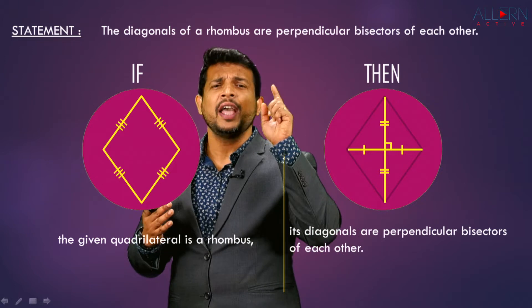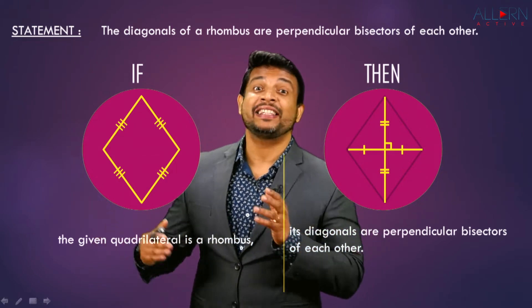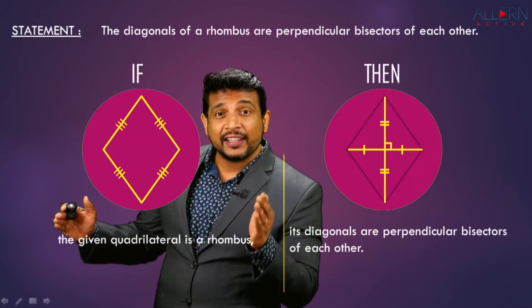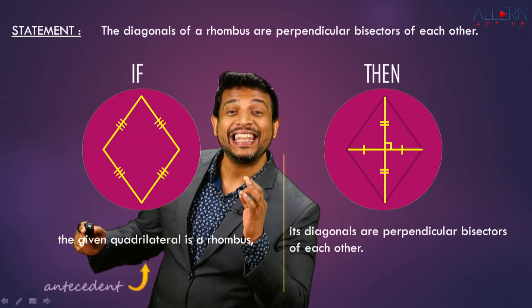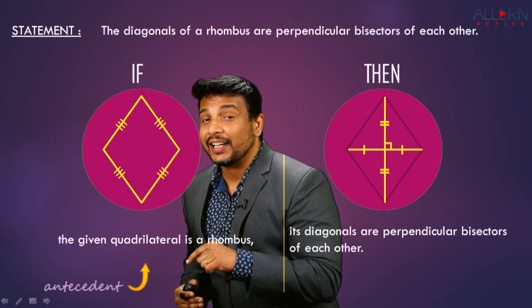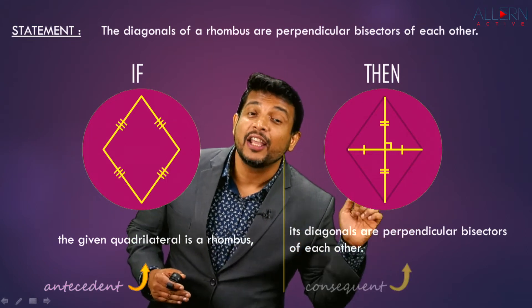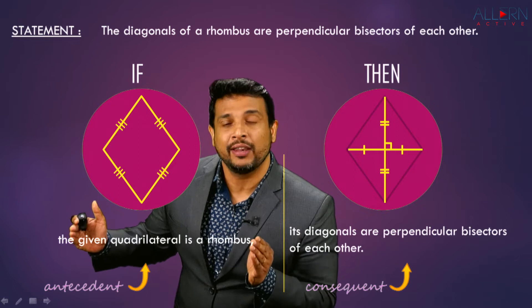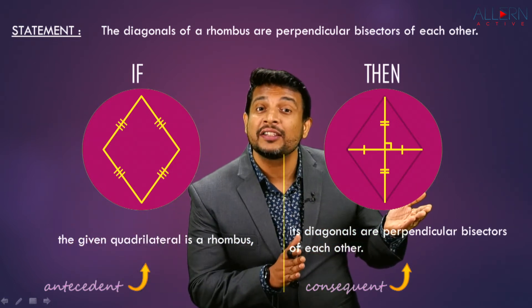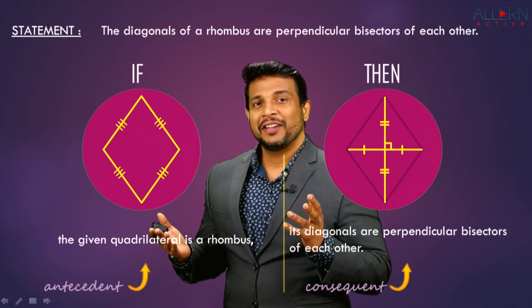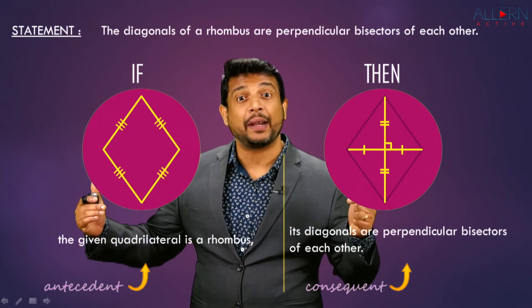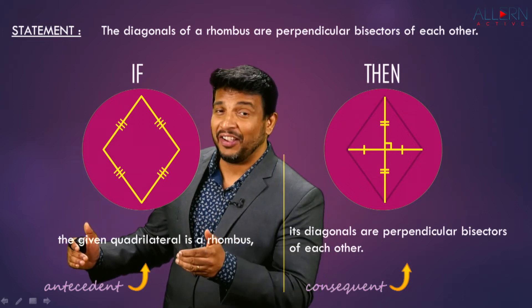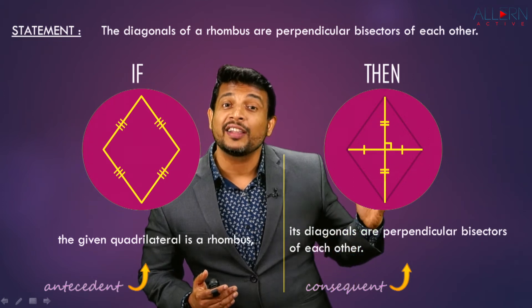In examinations, you may be given a statement and asked to write it in the conditional — that is, the if-then — form. When we write it that way, the statement between 'if' and 'then' is called the antecedent, which is essentially the 'given.' The statement that follows 'then' is called the consequent, which is the 'to prove' or the result.